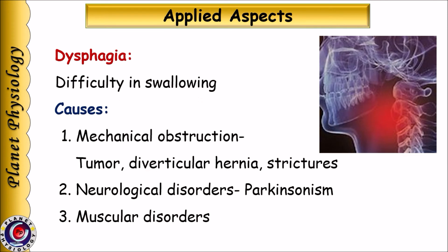Having covered the normal physiology of deglutation, let us study what can go wrong. The term dysphagia means difficulty in swallowing. It can occur due to mechanical obstruction to the passage of bolus, either because of a tumor, diverticular hernia, or formation of strictures. Dysphagia can also be due to neurological disorders like Parkinson's disease or muscular disorders.